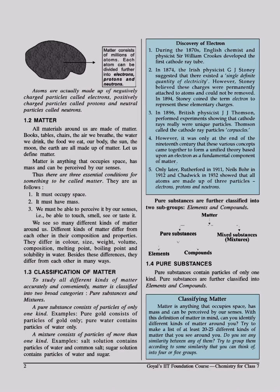Atoms are actually made up of negatively charged particles called electrons, positively charged particles called protons, and neutral particles called neutrons. Matter - all materials around us - are made of matter: books, tables, chairs, the air.